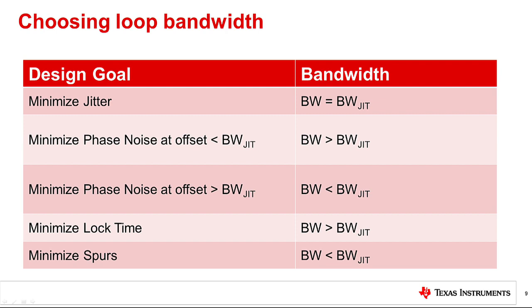If choosing the loop bandwidth equal to this optimal jitter loop bandwidth gives acceptable performance for phase noise, spurs, and all parameters, then just use that.